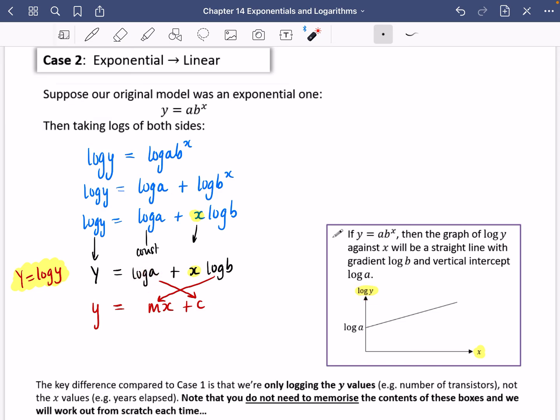But just notice the difference here. The key difference compared to Case 1 is that we're only logging the y values for this. So like the number of transistors that we did for the computers, not their x values, which was the years elapsed. No, you don't need to memorize the contents of these boxes and we will work them out from scratch each time.